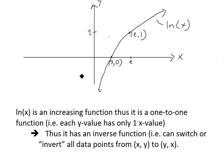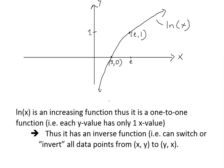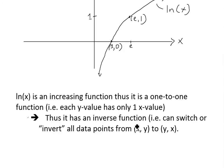From this graph you can see that ln of x is an increasing function — it's always going up, there's no up and down. Thus it's a one-to-one function, which I showed in my earlier video. This means each y value has only one corresponding x value. For example, if you draw a horizontal line it only hits one x value, unlike a sine or trigonometry curve where you'd get two x values.